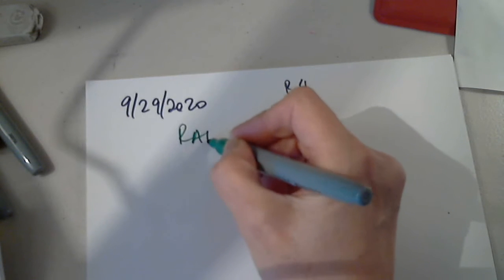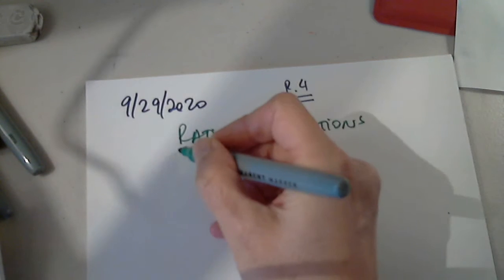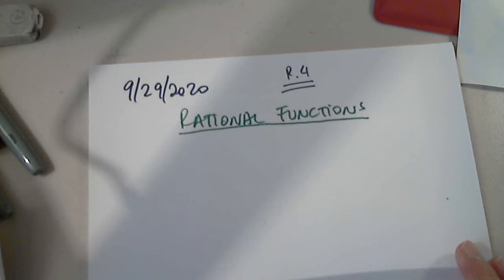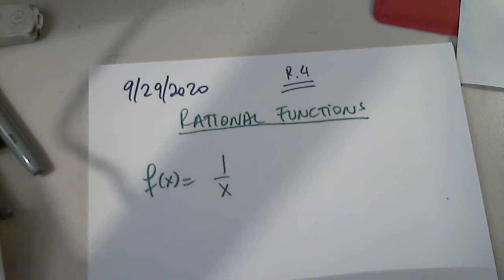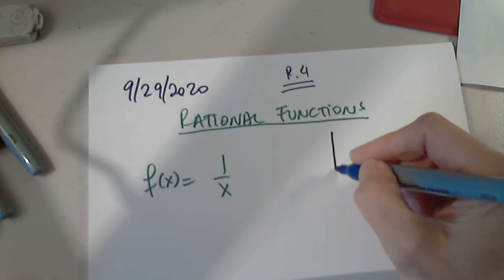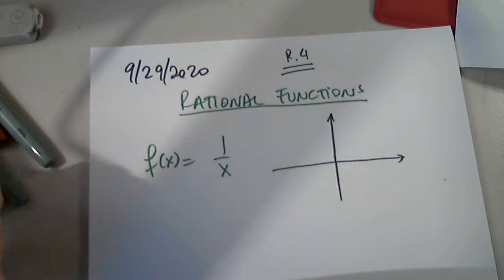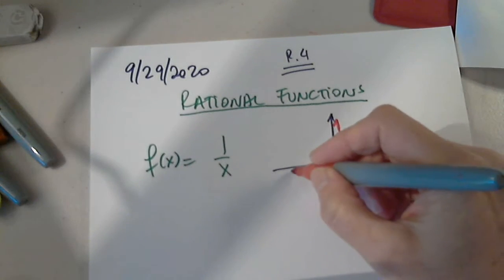Again, we looked at quadratic functions. I want to talk about rational functions a little bit. So rational functions — I want to say that these are the most complex functions so far that we have looked at. The simplest possible rational function is this, and this is a graph to remember. We really do have to remember this graph. It's symmetric with respect to the origin.